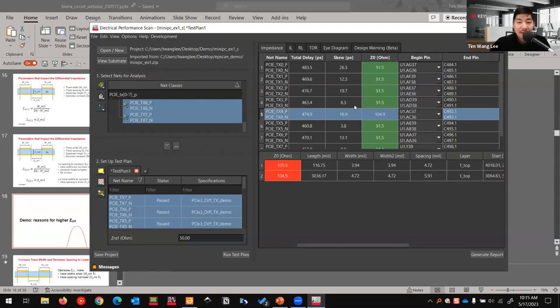If we want to make this impedance lower, that means we will decrease the spacing. Let's go to this one. Indeed, from 5.91 we change it to 4.72. And the same way, from 4.72 we increase the width to lower the impedance to 5.91.